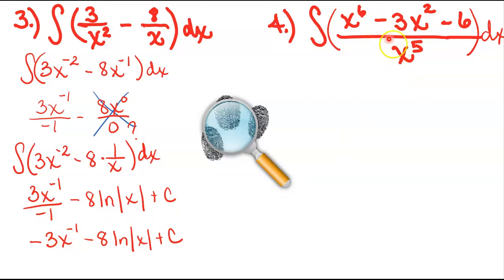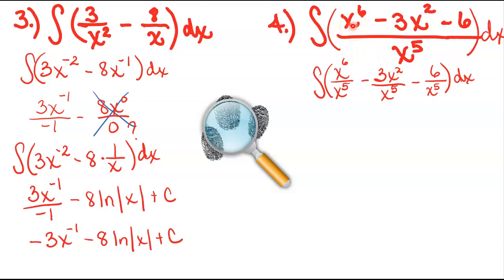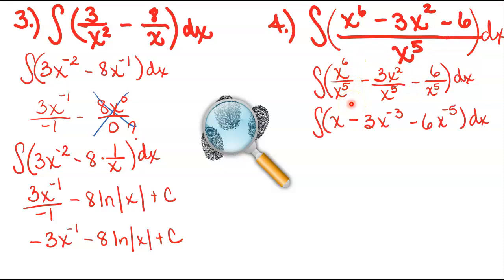For this next one, I don't have a quotient rule, so there has got to be a way that I can rewrite this to get rid of that quotient. I'm going to break all these up over that common denominator: x to the 6th over x to the 5th, negative 3x squared over x to the 5th, and negative 6 over x to the 5th. Then I simplify — when your bases are the same and you're dividing, you subtract your exponents. That gives me x to the 1st, negative 3x to the negative 3, and negative 6x to the negative 5, using a negative exponent to bring terms out of the denominator.